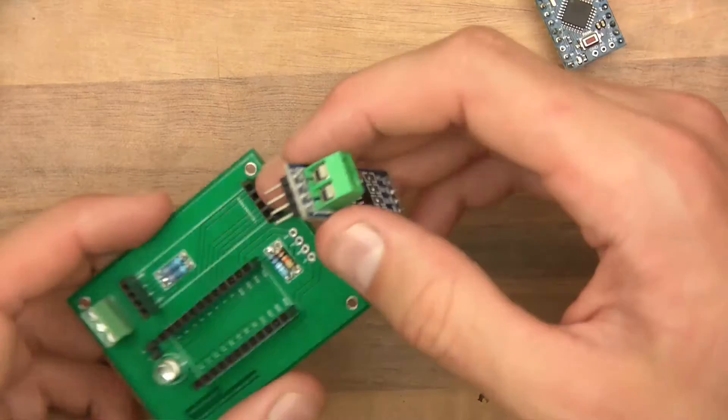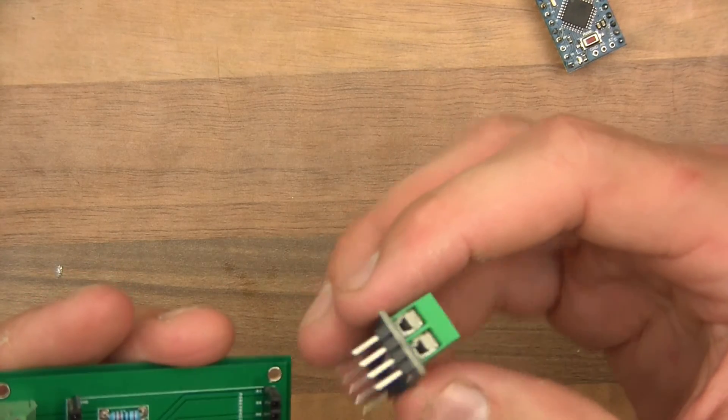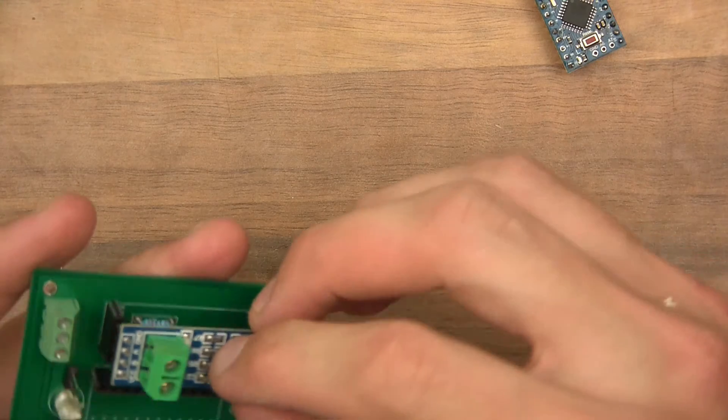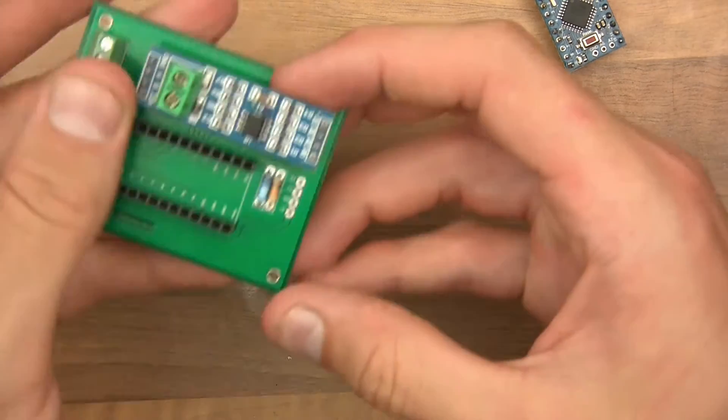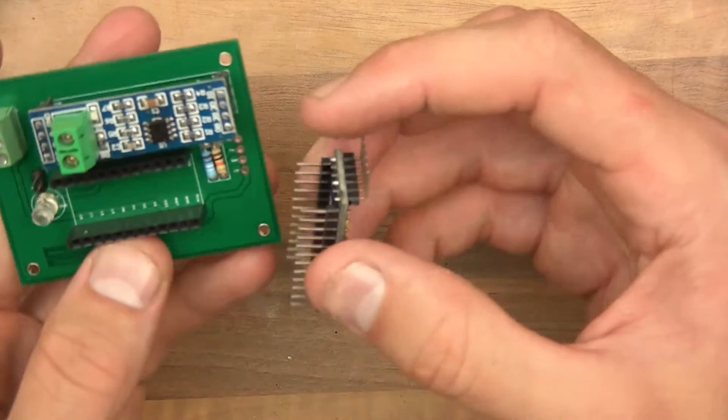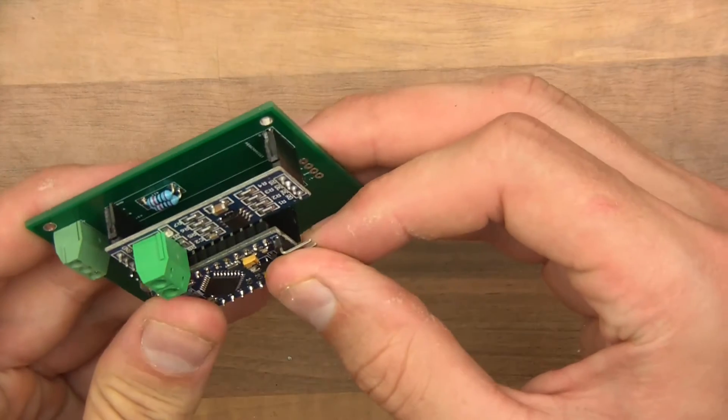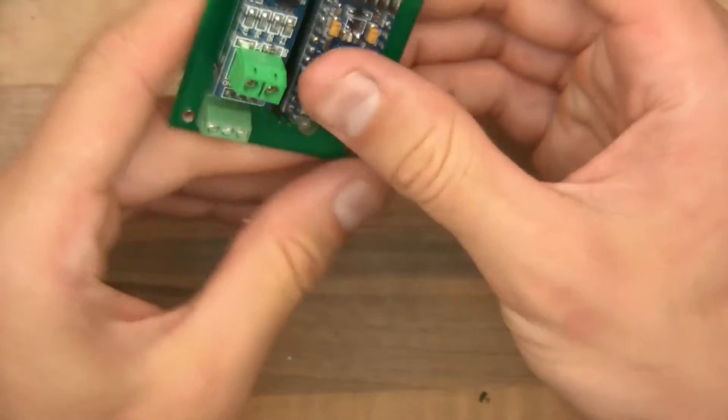So now I'm just going to put these in place. So what goes where now? Ground, so that's going to go there, like that. And the Arduino, where's pin 9? Pin 9's there, so that would go there. And there it is.